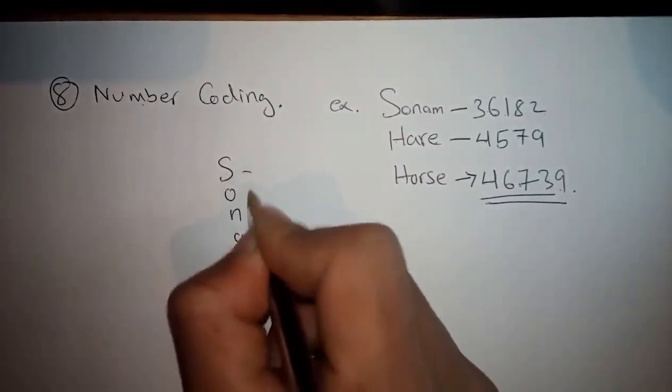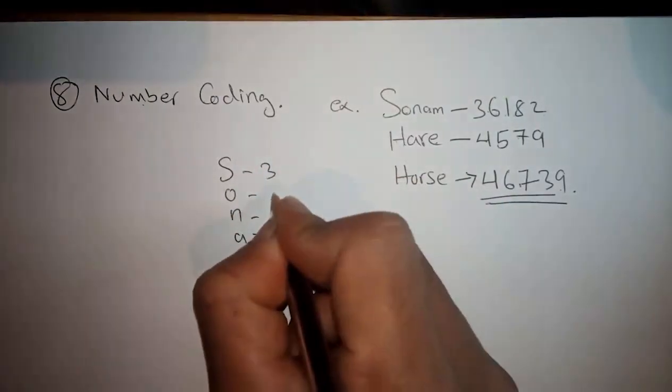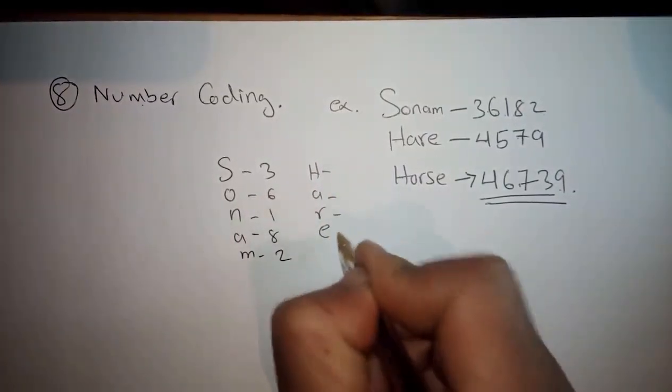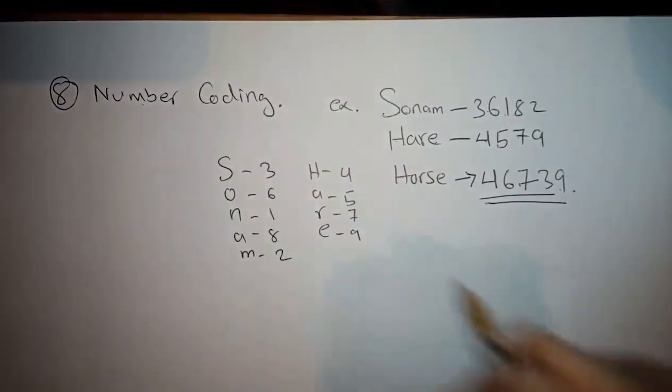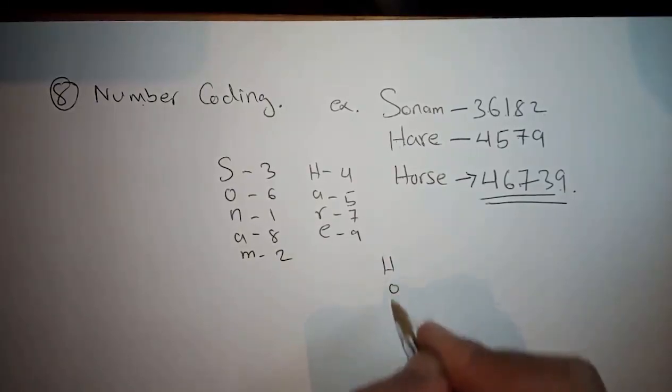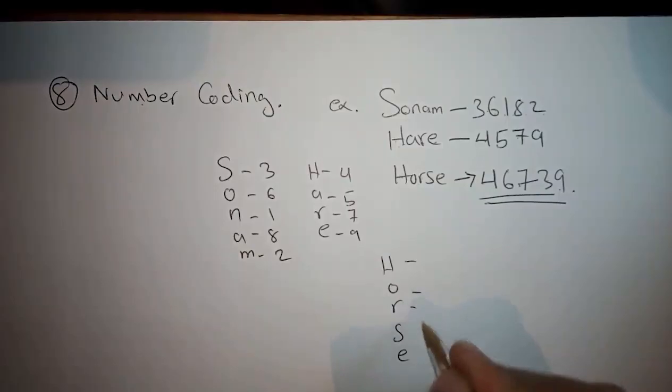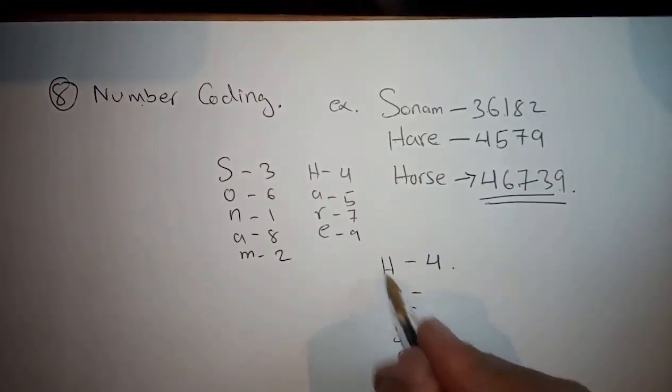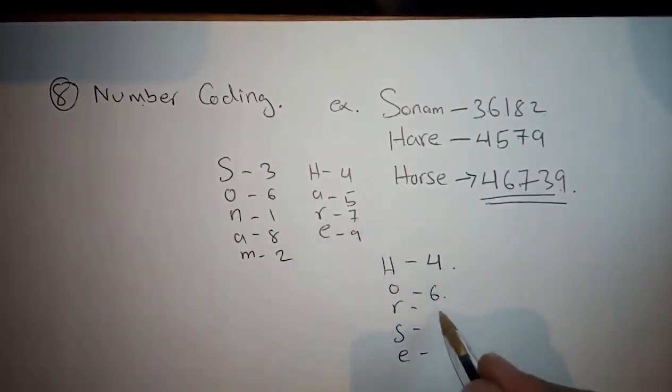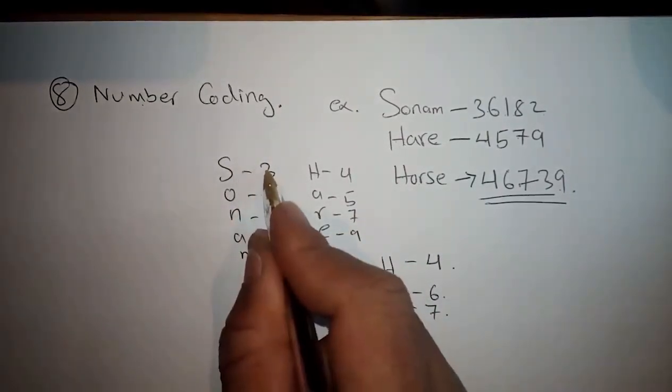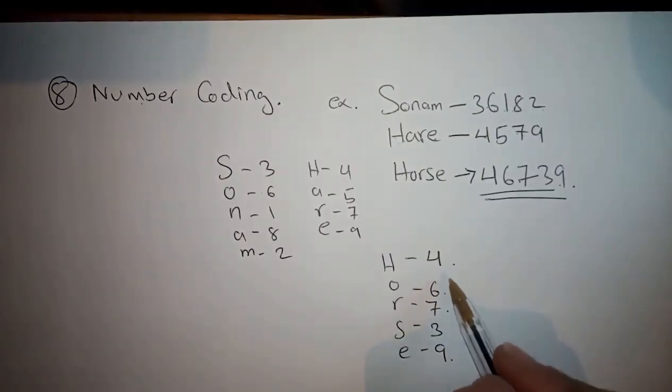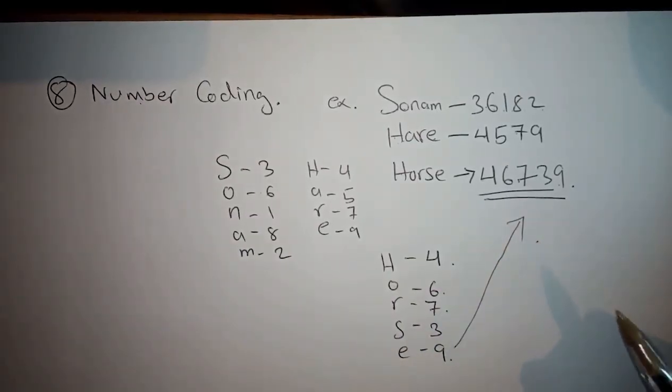A simplified version: Sonam is given as three, six, one, eight, two. Similarly Harry (H, A, R, E) is four, five, seven, nine. Now for Horse: H's corresponding number is four, O is six, R is seven, S is three, E is nine. So Horse will be coded as four, six, seven, three, nine. This is number coding.